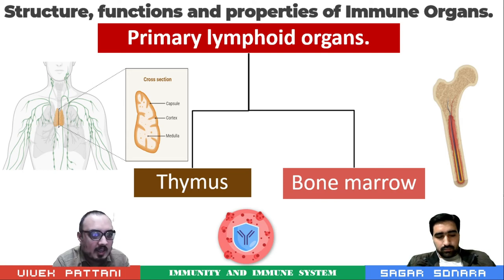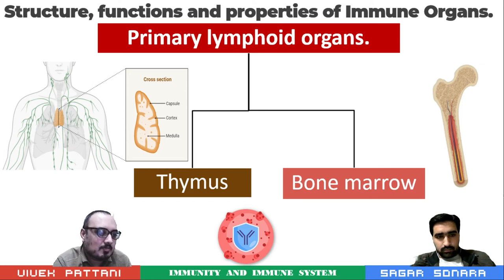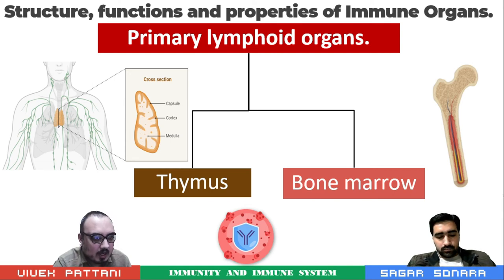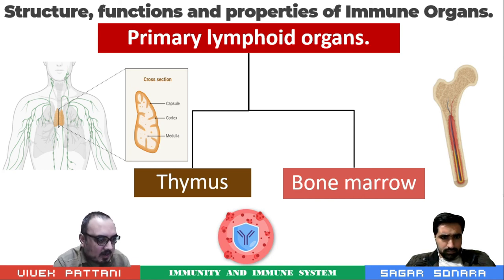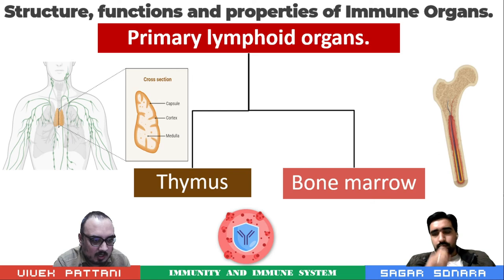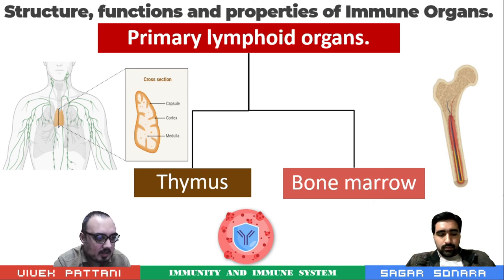Each lobe is differentiated into outer cortex and inner medulla. The cortex is densely populated and contains numerous thymocytes, epithelial cells, and nurse cells. The medulla is sparsely populated and contains few thymocytes, epithelial cells, dendritic cells, and Hassall's corpuscles. There are also thymic hormones such as thymulin, thymopoietin and thymosin which are produced and aid in the development of T cells.